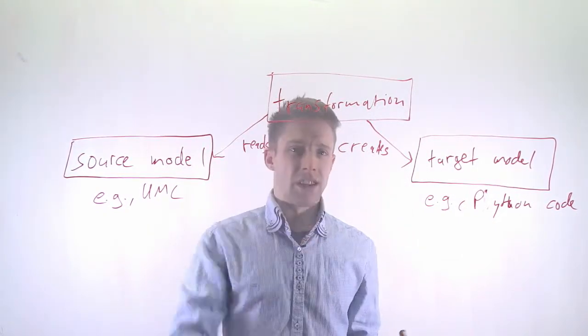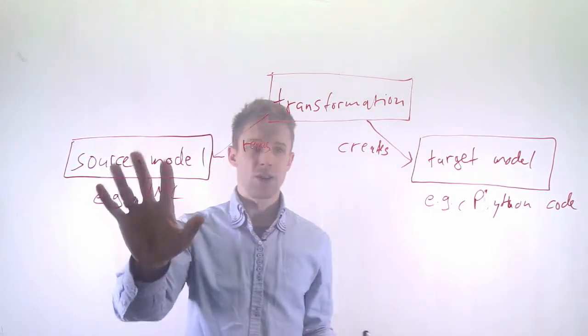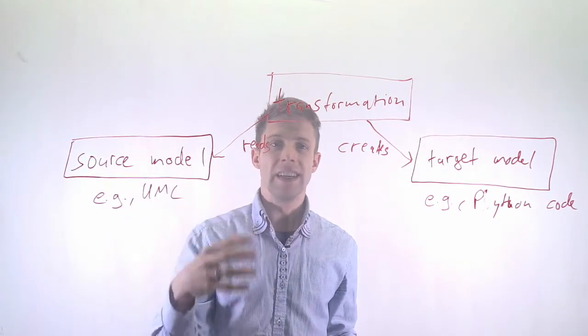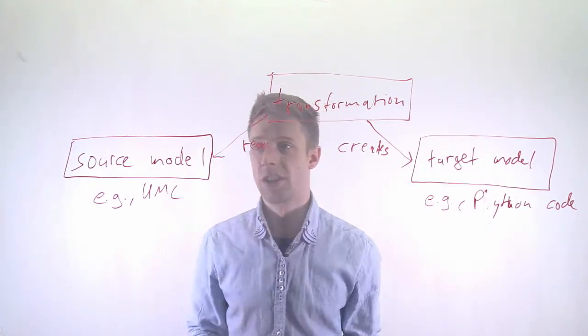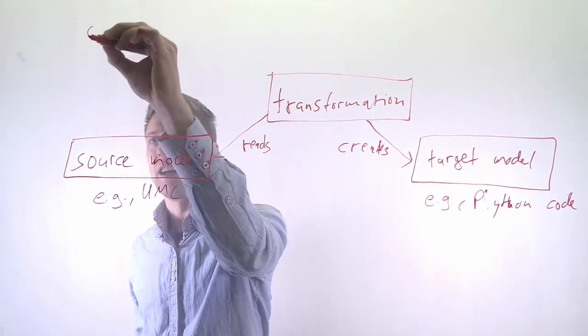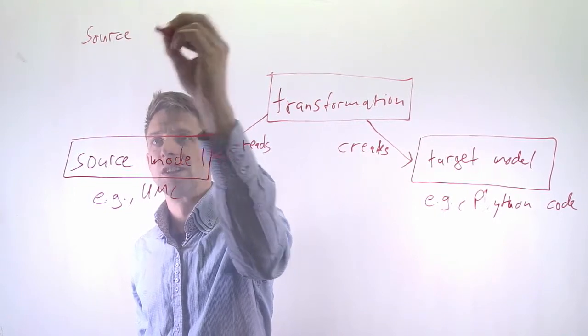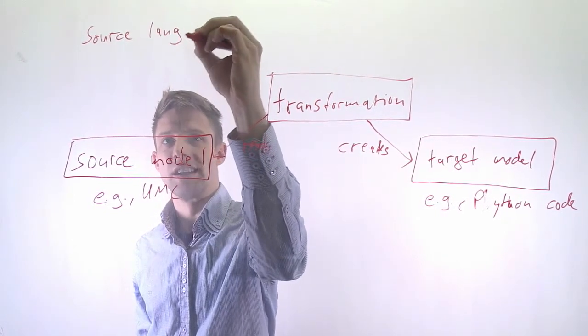Now, what does this transformation need in order to work? It needs to understand what the source model is and what kind of notation it is. And it needs to know how the target model should look like. So what it needs is a source language, a source notation that it understands.